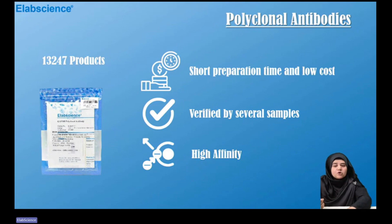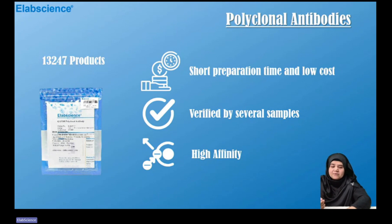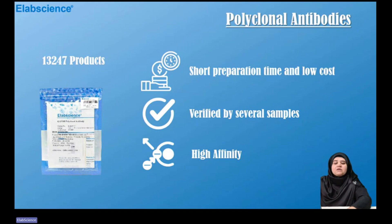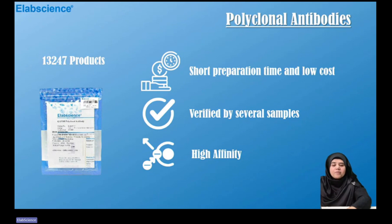Polyclonal antibodies can recognize multiple antigenic epitopes and cause precipitation reactions. They have advantages of short preparation time and low cost, and are widely used in scientific research and diagnosis. At E-Lab Science, our polyclonal antibodies have very high affinity, and we have compiled high-quality polyclonal antibody products from various species and applications. We have more than 13,000 polyclonal antibody products.